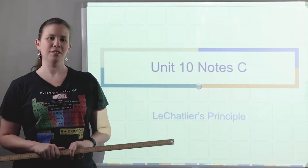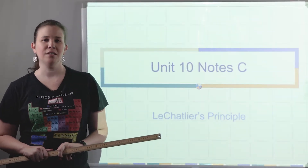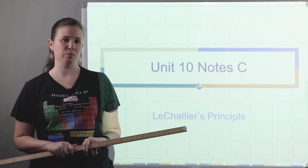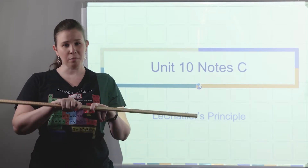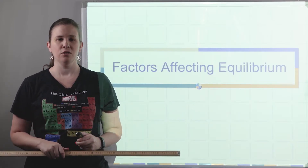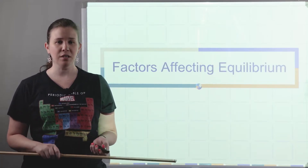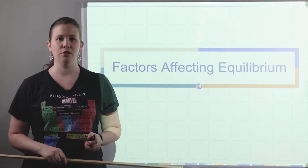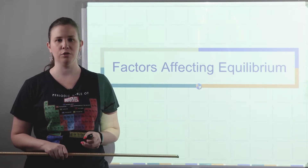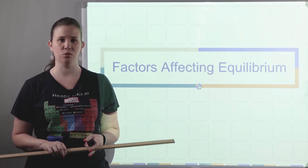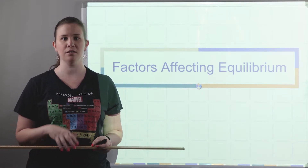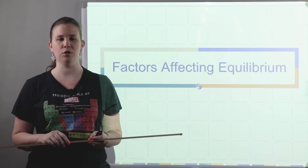Hey there guys! Welcome to Unit 10, Note C. Today we're going to talk about Le Chatelier's principle, which is all about finding a balance. We're going to look at three different factors that are going to affect the equilibrium concentrations, or the ratio of product to reactant that exists at an equilibrium.